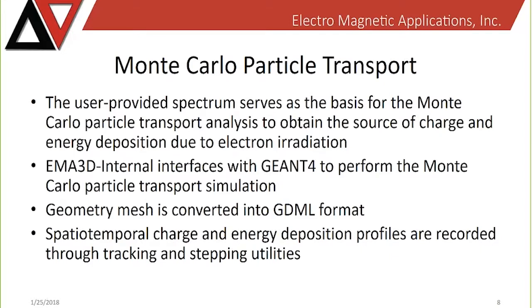The first portion of the simulation involves a Monte Carlo particle transport analysis. The geometry mesh supplied by the user is converted into a GDML format. That, combined with the user-provided spectrum, serves as the basis of the particle transport analysis to obtain the location and time of charge and energy depositions due to electron irradiation. EMA 3D internal interfaces with GEANT4 to perform the Monte Carlo particle transport simulation.